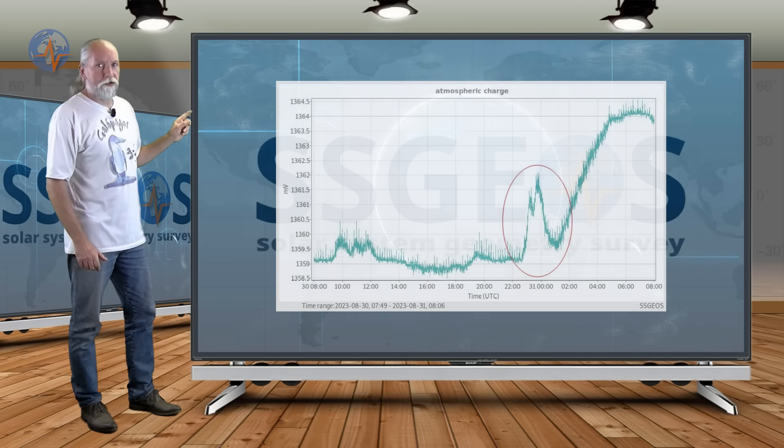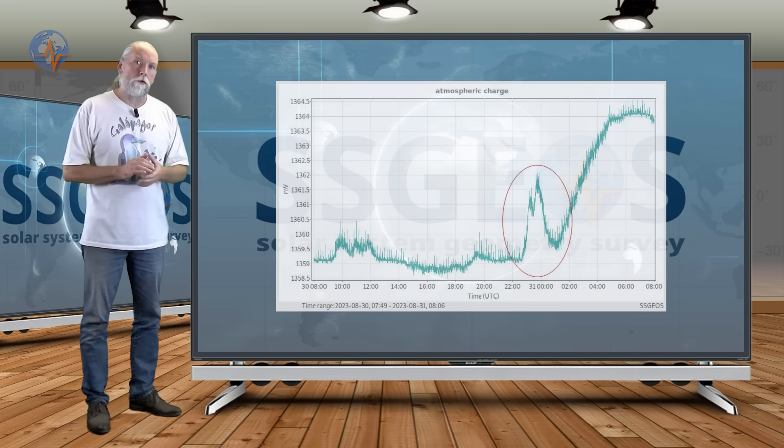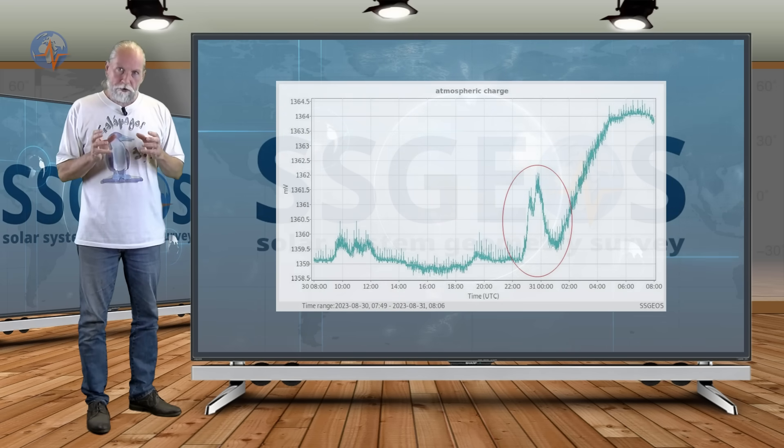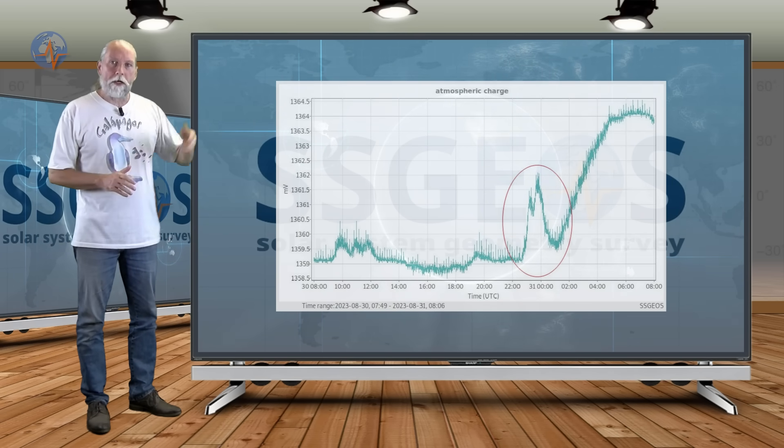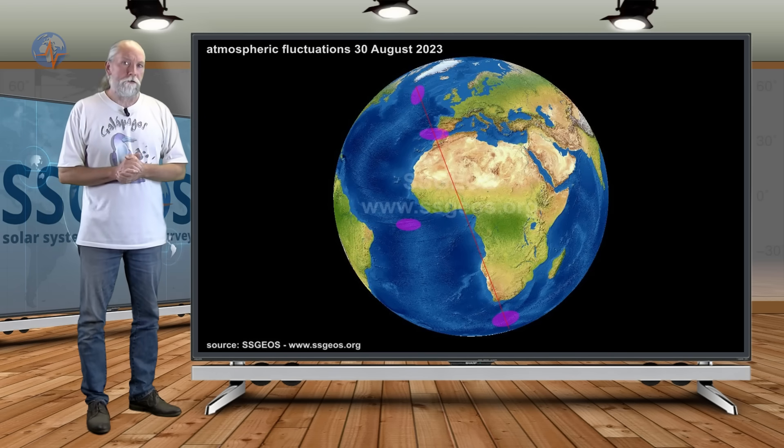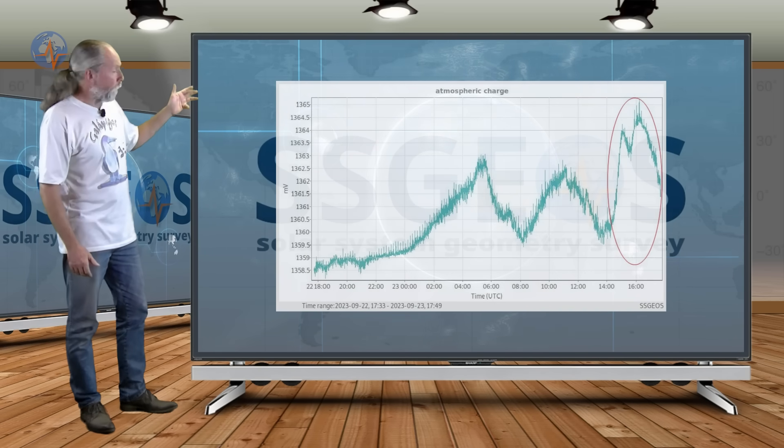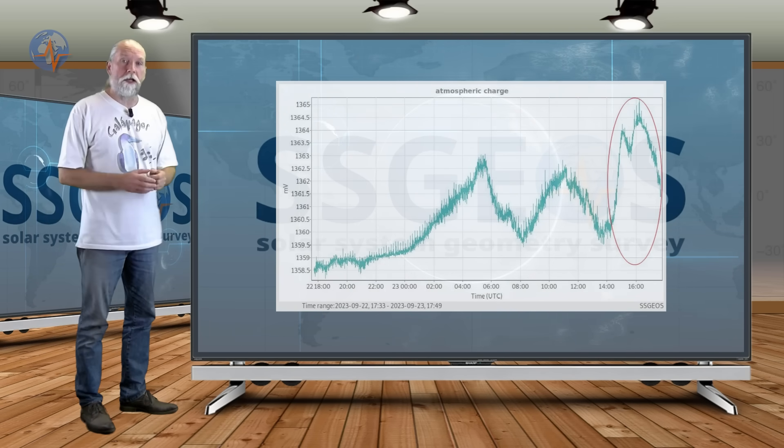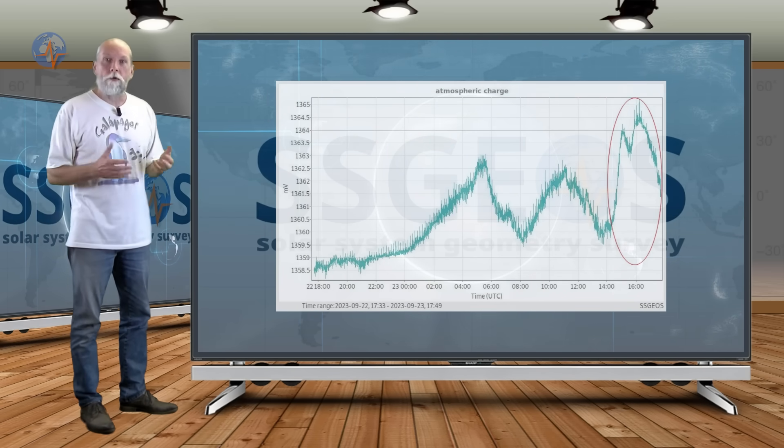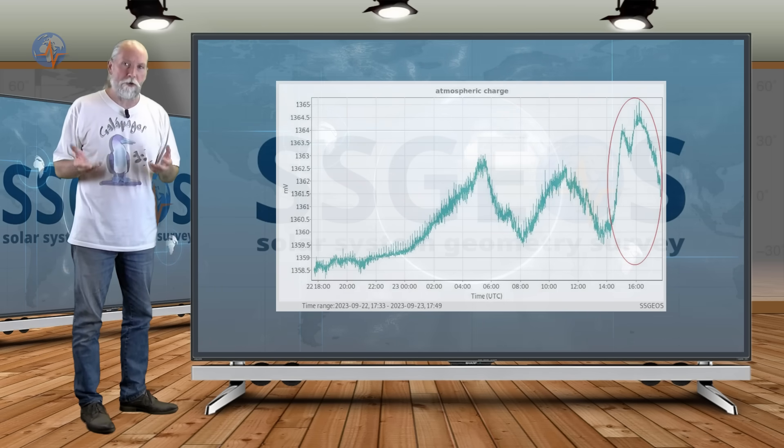If we look at the atmospheric fluctuations, this typical M-shaped form, and we look at the Morocco earthquake, the fluctuation that marked the line going over Morocco occurred on the 30th of August. That was 9 days before the earthquake. So if you look at this obvious atmospheric fluctuation that happened on the 23rd and we add 9 days, we would end up around the 2nd of October. That is a possibility.